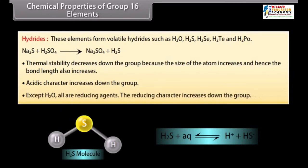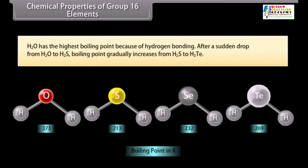Except H2O, all are reducing agents. The reducing character increases down the group. H2O has the highest boiling point because of hydrogen bonding. After a sudden drop from H2O to H2S, the boiling point gradually increases from H2S to H2TE because of increase of molecular mass and hence Van der Waal's forces.